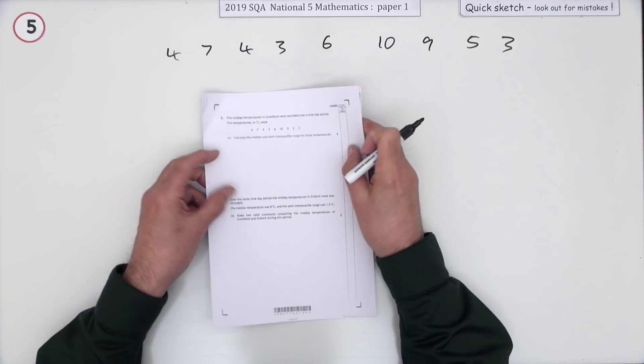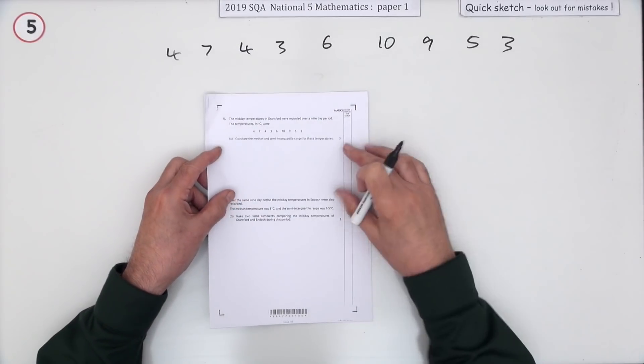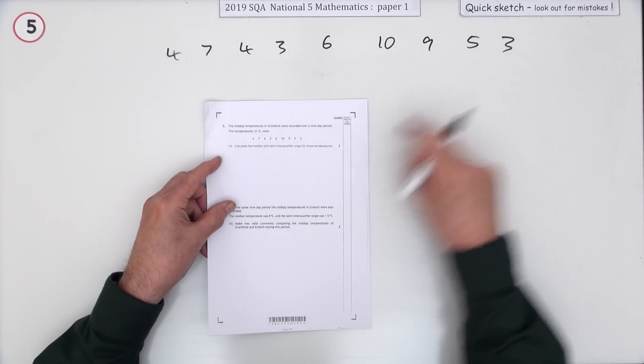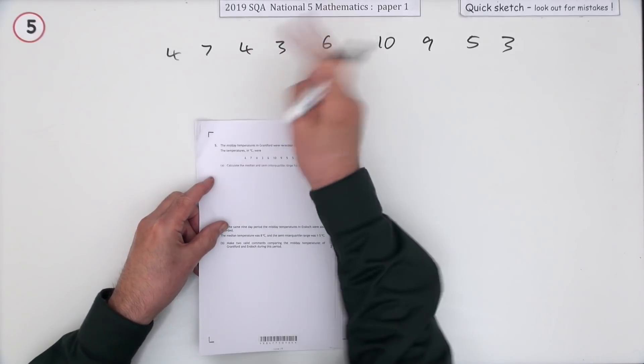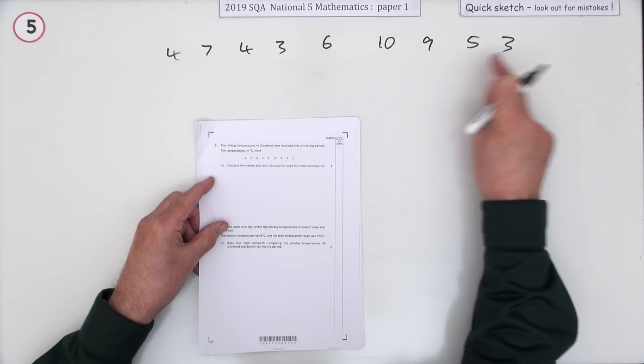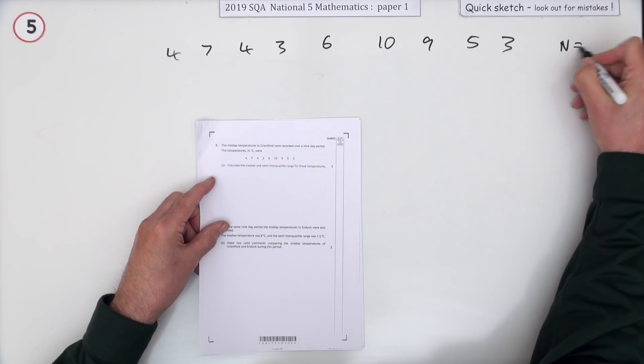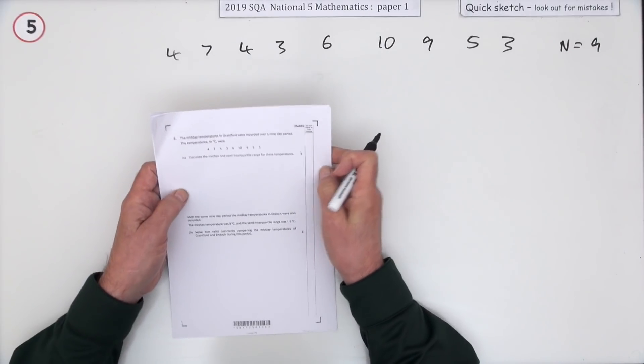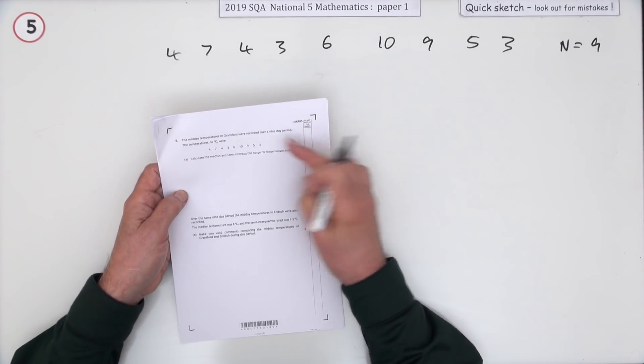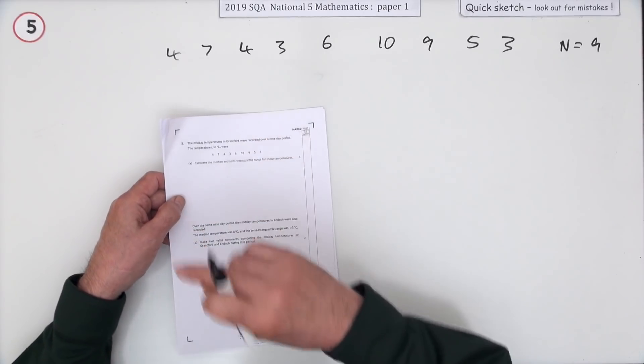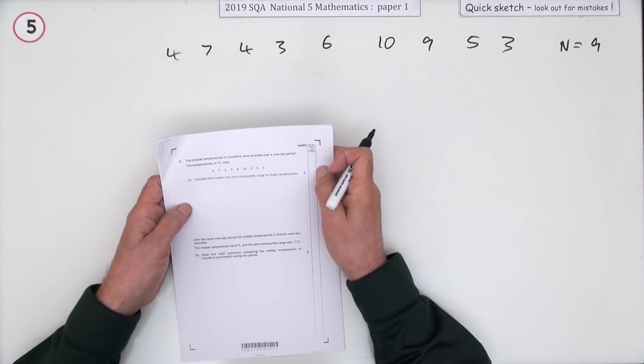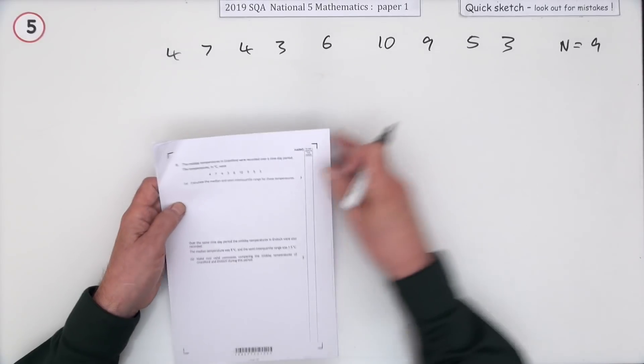So number 5 then. Well, what we've got here. That's the statistics part now, isn't it? Here's our list of numbers. The first thing you should do is count them up. 1, 2, 3, 4, 5, 6, 7, 8, 9. N equals 9. What does it say? The midday temperatures were recorded over, and then it tells you. Read the question first. A 9-day period, and the temperatures are written down like this.